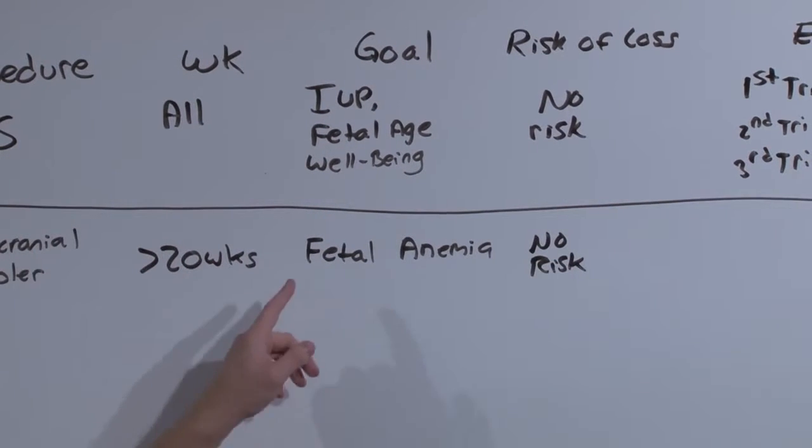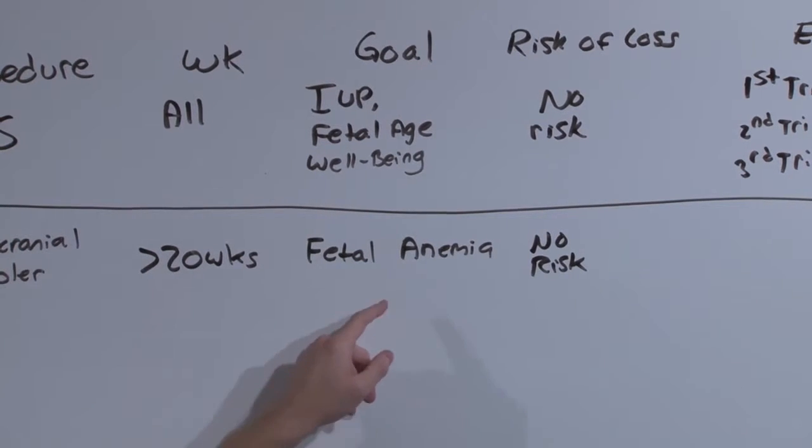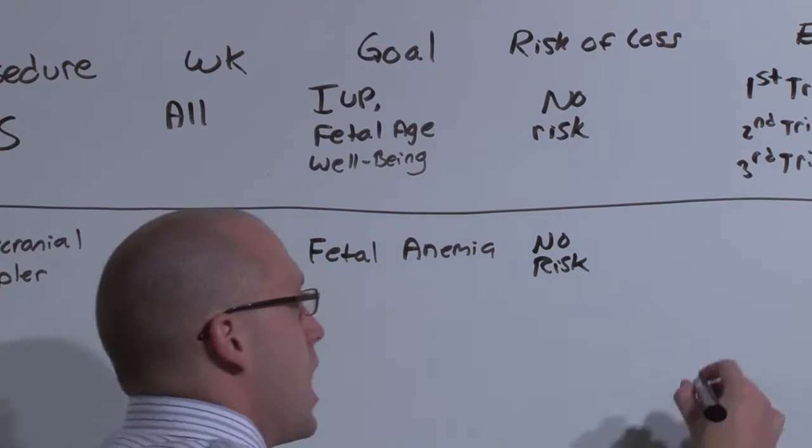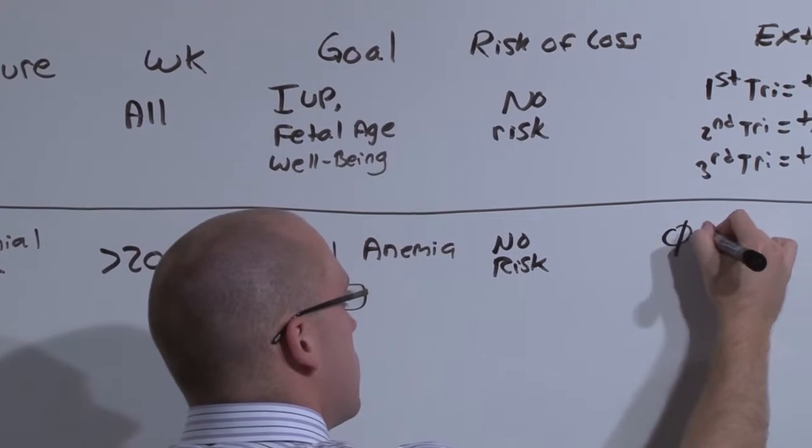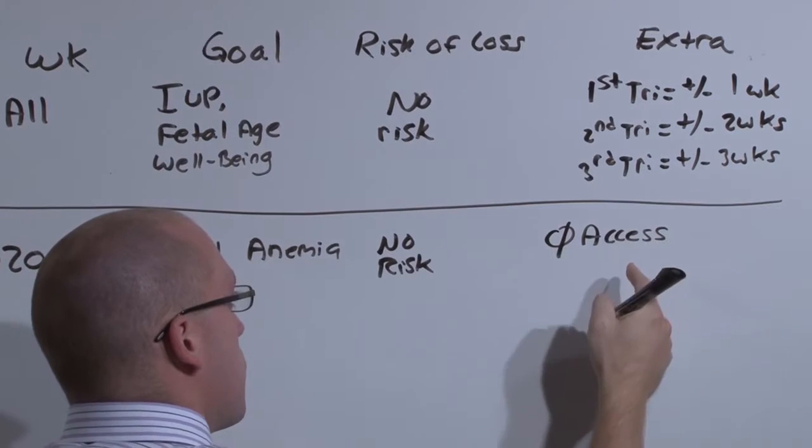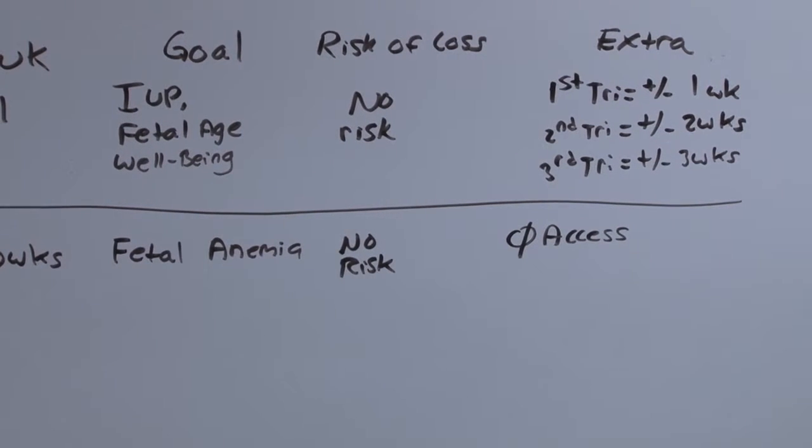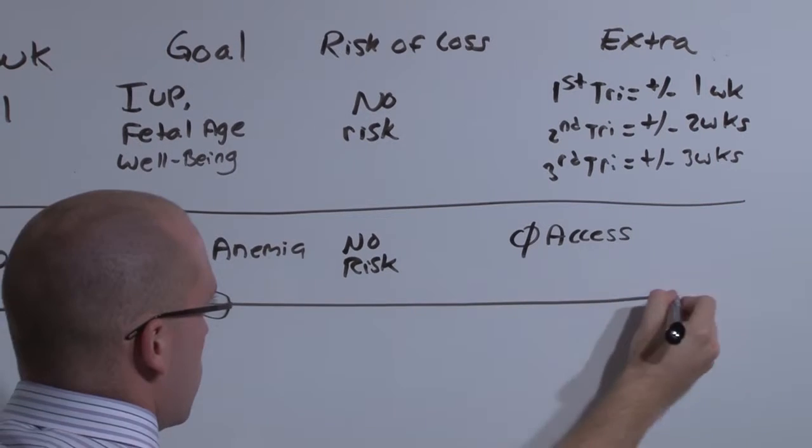The idea being that if the fetus is anemic, you can measure an increased flow through the cranium. The increased flow is a compensatory mechanism for the anemia. However, it does not provide any access for transfusion. So if the baby is anemic, you may still need to do a PUBS. But for diagnosis alone, use the transcranial Doppler.